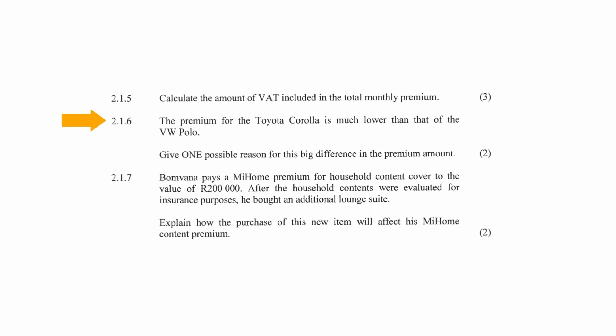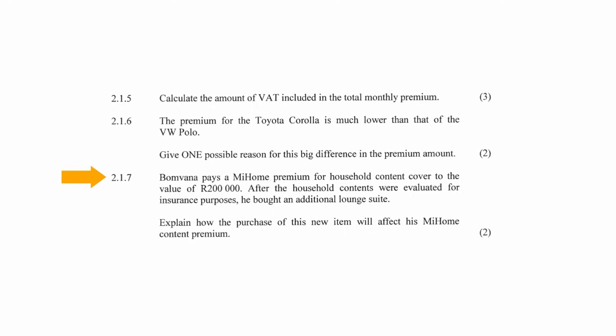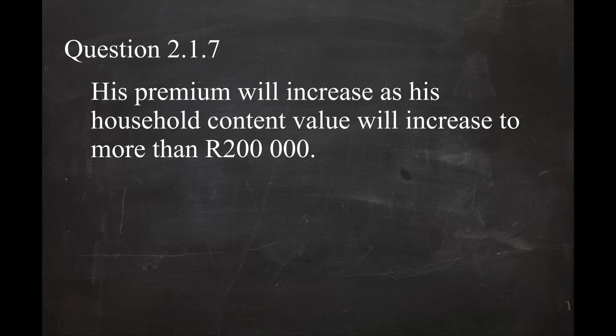In question 2.1.6, it is stated that the premium for the Toyota Corolla is much lower than that of the VW Polo. One possible reason is that the Toyota is an older model vehicle compared to the VW Polo, meaning it costs less to replace or repair. In question 2.1.7, it is stated that this person pays a My Home premium for household content cover to the value of R200,000, and after the household contents were evaluated, he bought an additional lounge suite. The effect on his My Home content premium is that his premium will increase as his household content value will increase to more than R200,000.